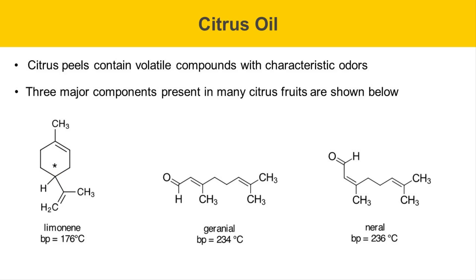The molecule in the middle is called geraniol. It has a boiling point of 234 degrees Celsius, and on the right is a compound called niral, which has a boiling point of 236. Geraniol and niral are stereoisomers of each other. They're cis-trans isomers about one of the alkene double bonds.